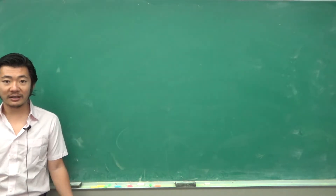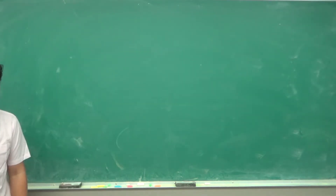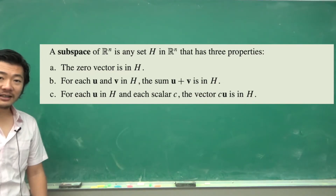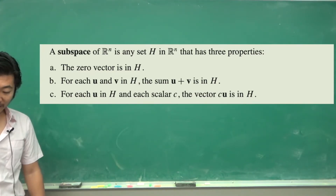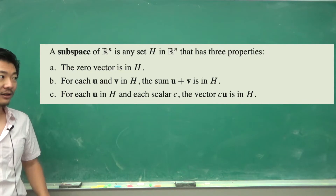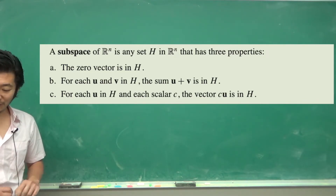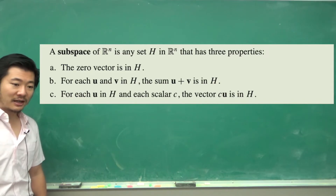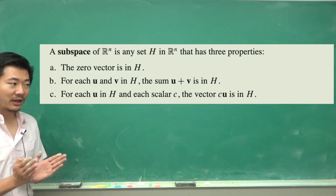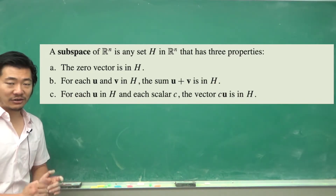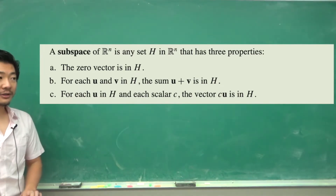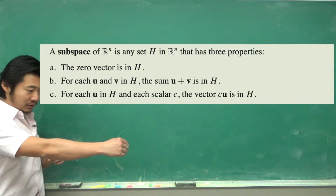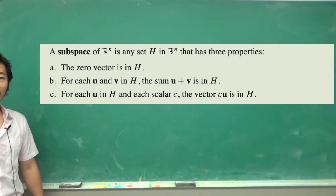So now we want to talk about a subspace of Rn. A subspace in Rn is any space H that sits inside Rn with three properties: the zero vector is in H; for each u and v in H, u plus v is in H — so when you add two vectors in your subspace, it stays in your subspace; and if you take a vector and multiply by a scalar, stretching or shrinking it, it still stays in your subspace.